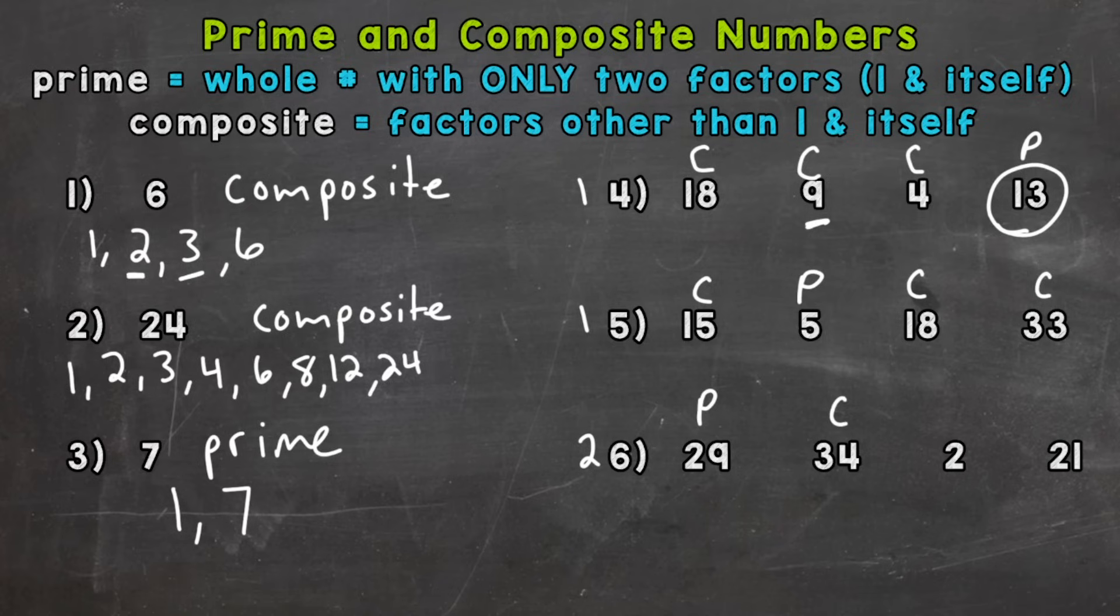Next, we have two, which is kind of a special number here, because it's the only even number that's prime. Two only has two factors. One and itself. One and two. So again, two, the only even number that is actually prime.